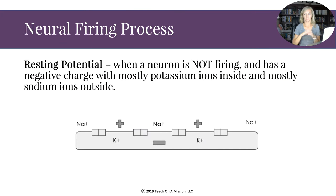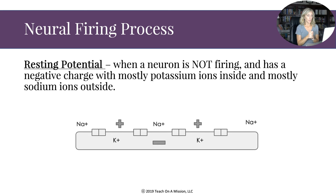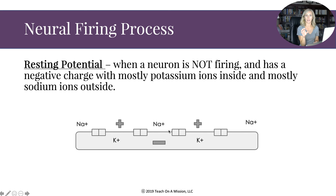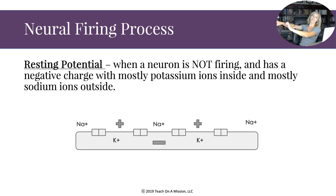Now let's talk about the neural firing process — how neurons communicate with each other. When a neuron is not being used at all, it is at resting potential. This is when a neuron is not firing; it has a negative charge. The axon looks like a giant negative sign.